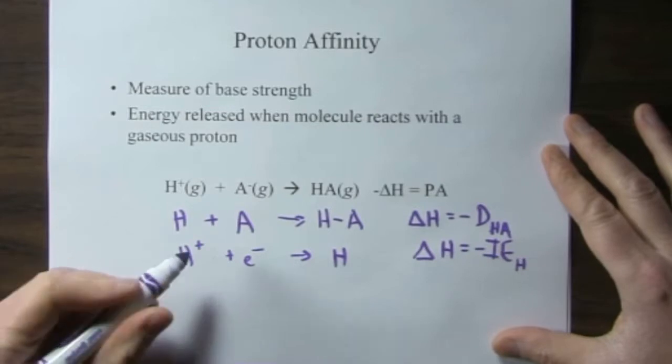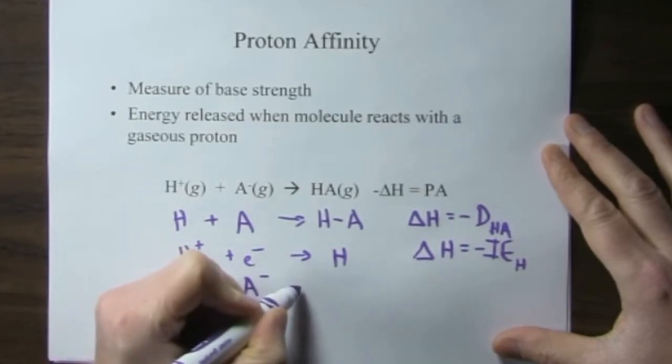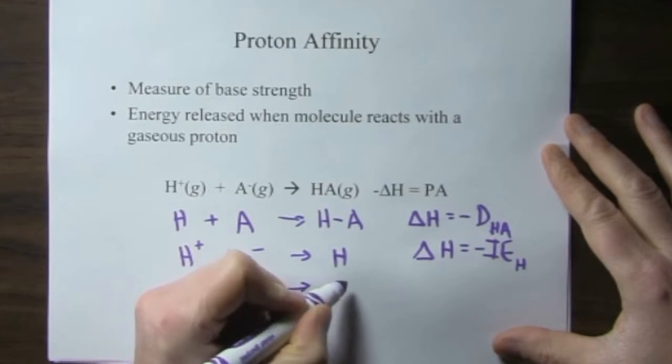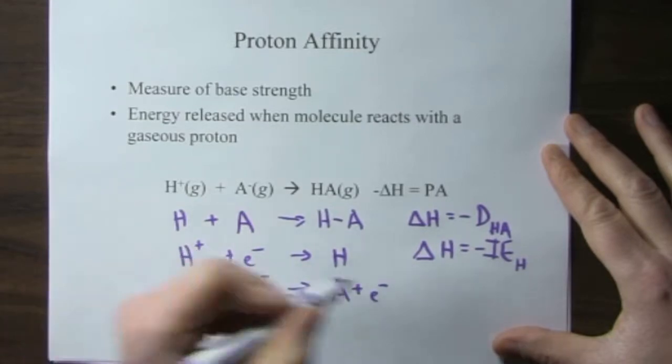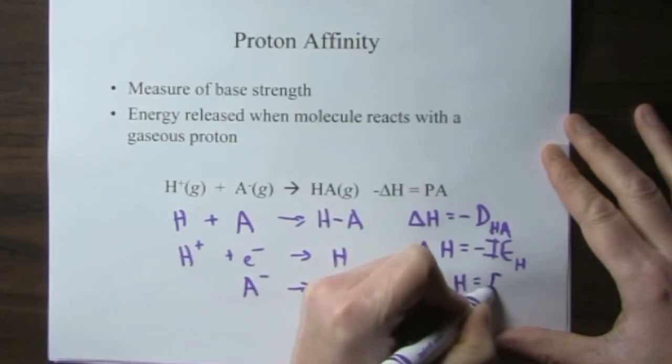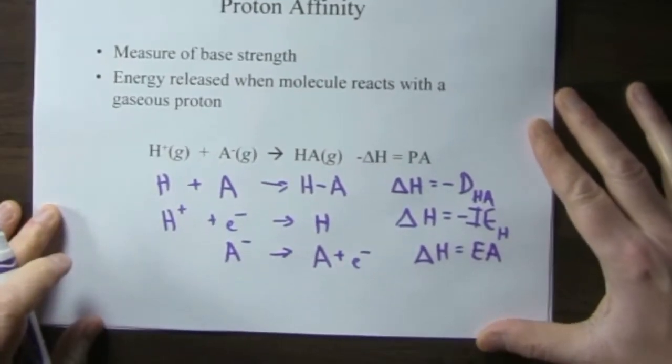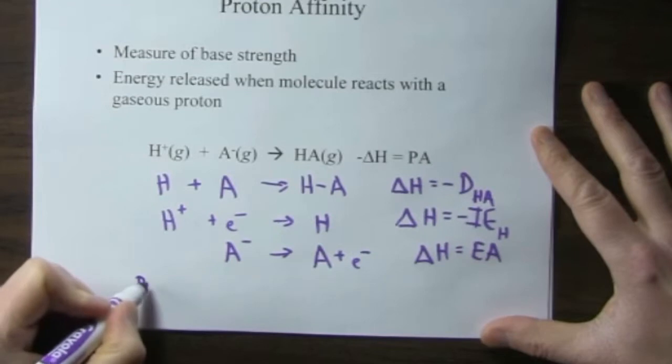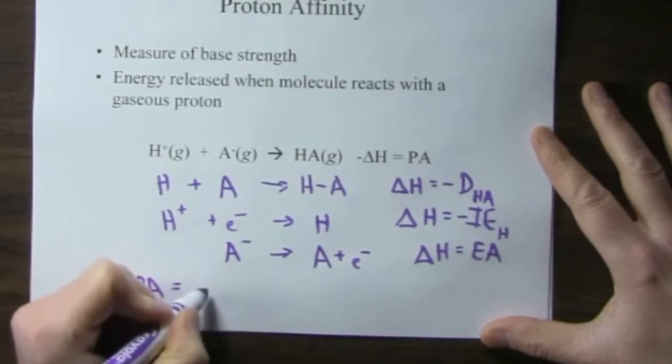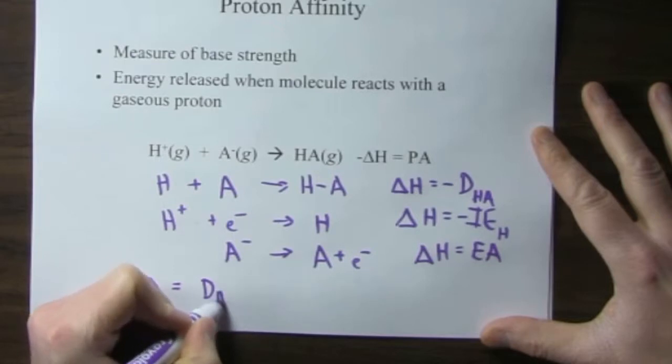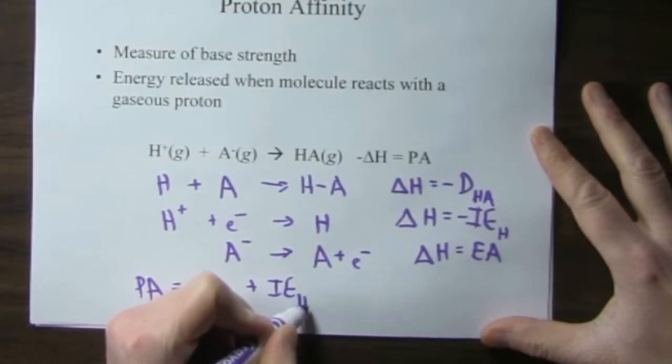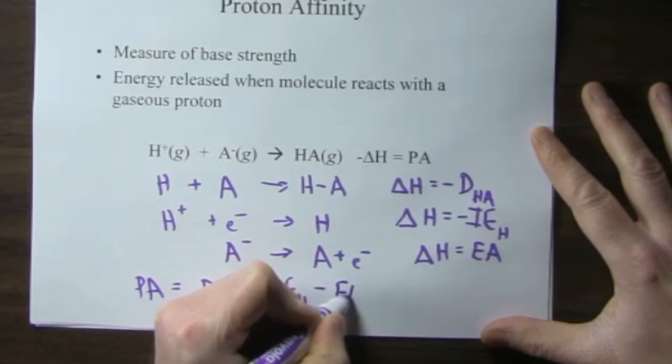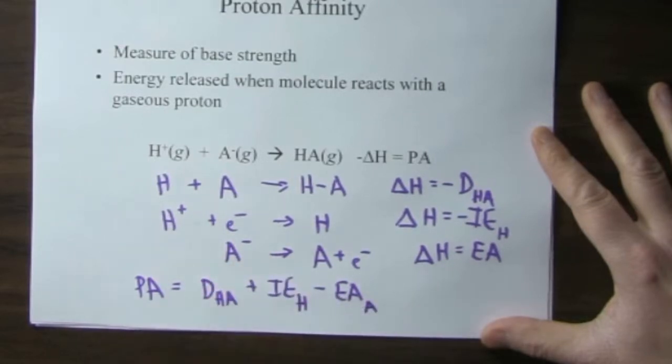And then we also need to form the ion. So that is, the base is gaining an electron, so that is the electron affinity. And so we see that there should be a periodic trend for proton affinity in the gas state, because it depends on the bond strength and the ionization energy of hydrogen, which is, of course, a constant, and then the electron affinity of the base. So we would expect a periodic trend.